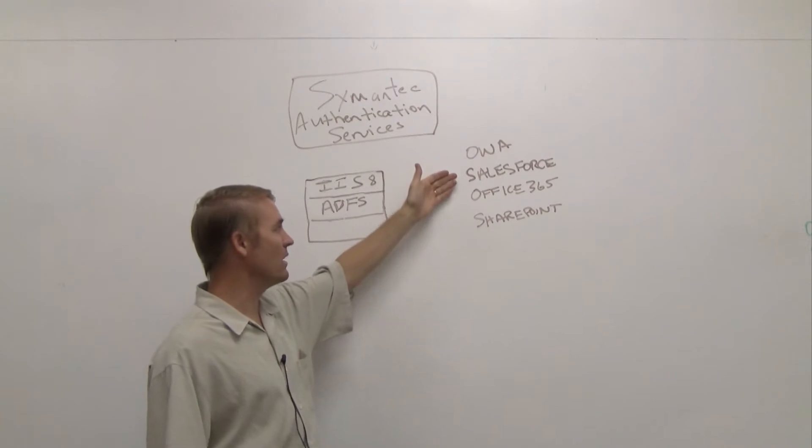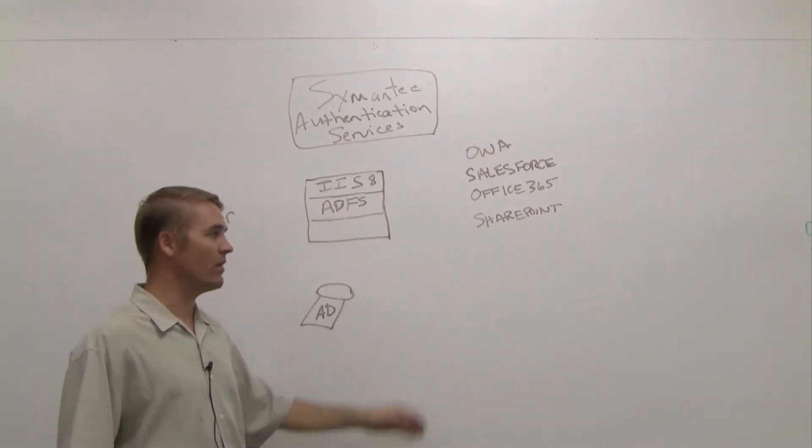You'll see here a reliant party could be like Salesforce, Okta Access, Office 365, or SharePoint.